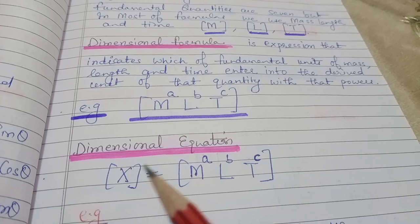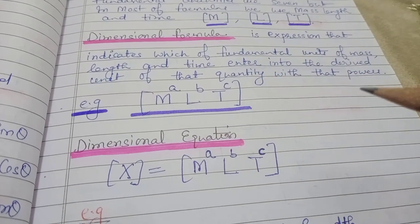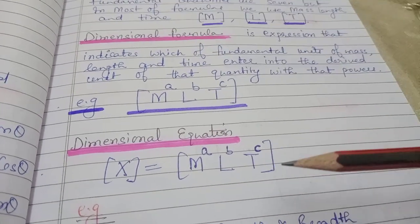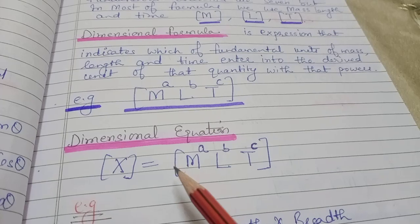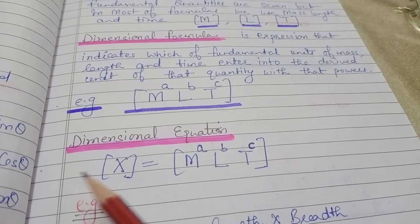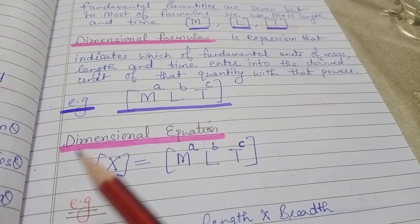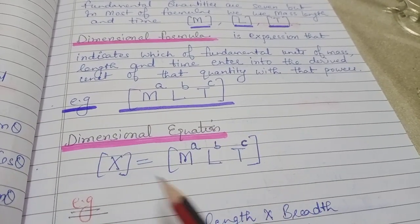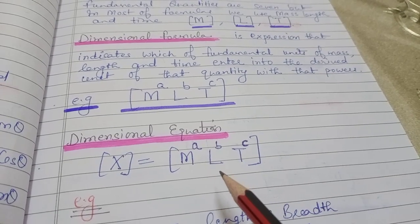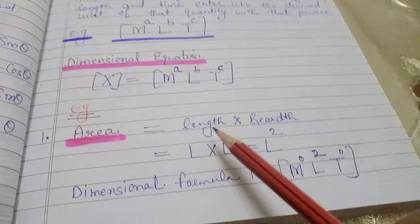अगली बात — dimensional equation क्या है? हमें आगे formulas और questions करने हैं, तो यह सारी चीज़ें पता होनी चाहिए, तब हमें आगे समझ आएगी। Dimensional equation क्या है? अगर इस पूरे dimensional formula को आप उस physical quantity के साथ equate कर देते हो, तो उसको पूरे को dimensional equation बोलते हैं। For example, मानलो यहाँ force है — force का dimensional formula लिख दिया और equate किया, तो वो equation बनती है। एक example लेते हैं, one by one करते हैं, आपको सारा clear होता जाएगा।